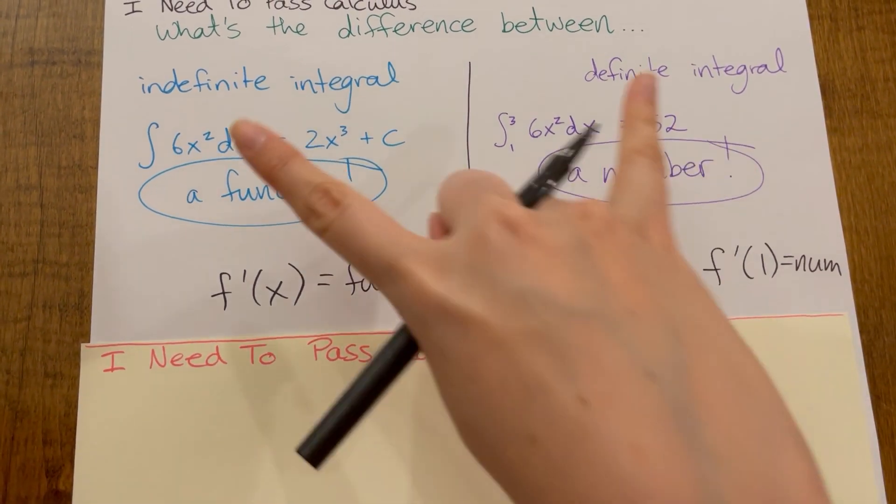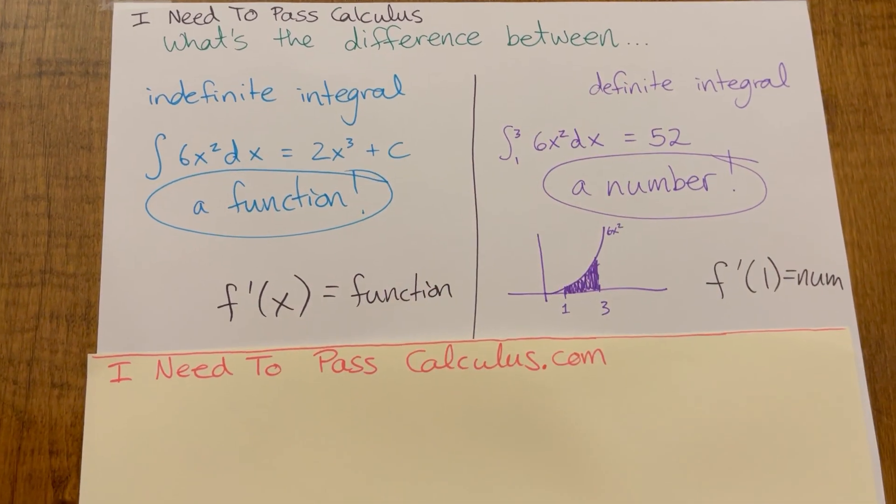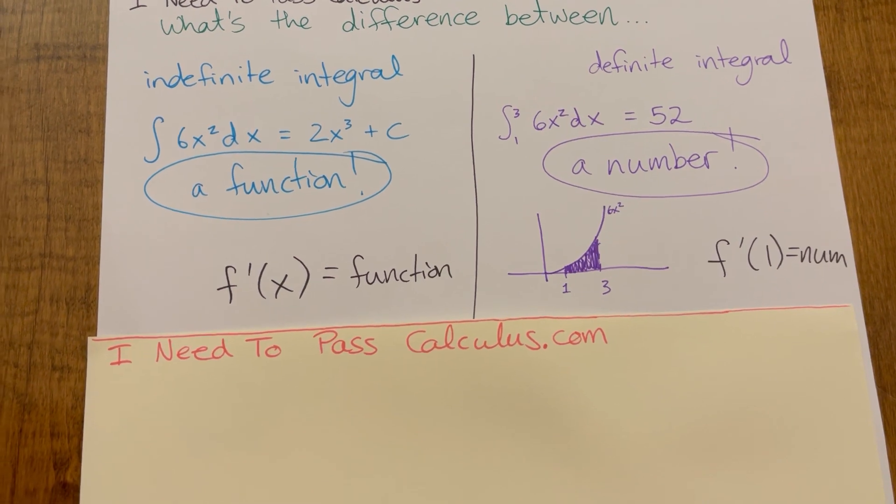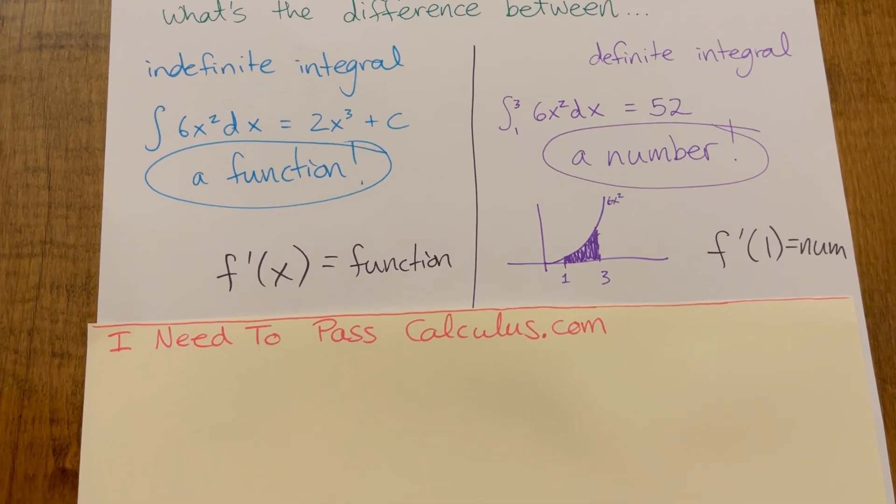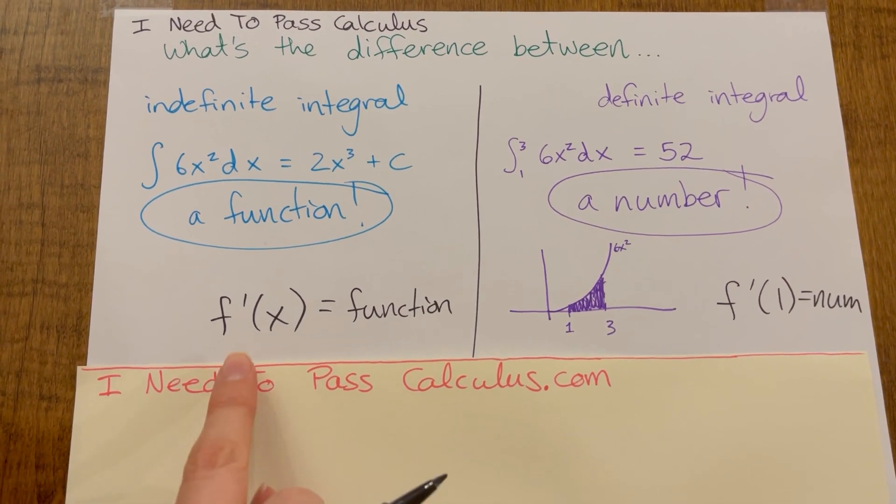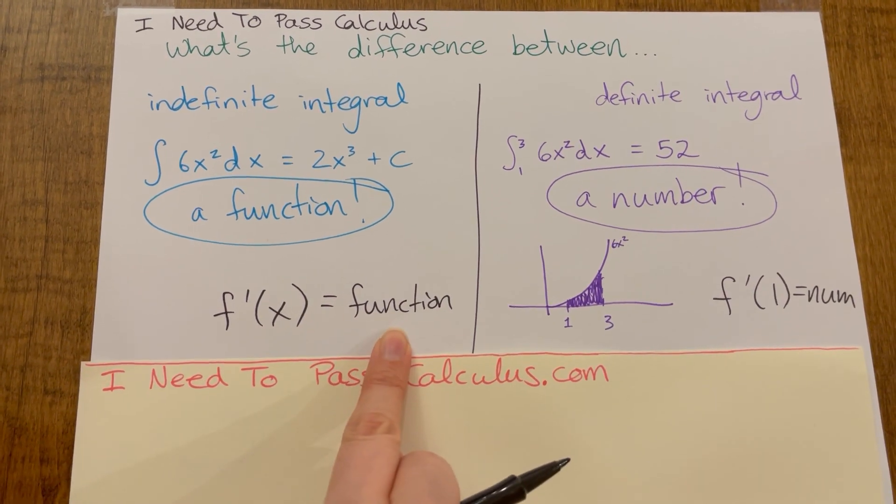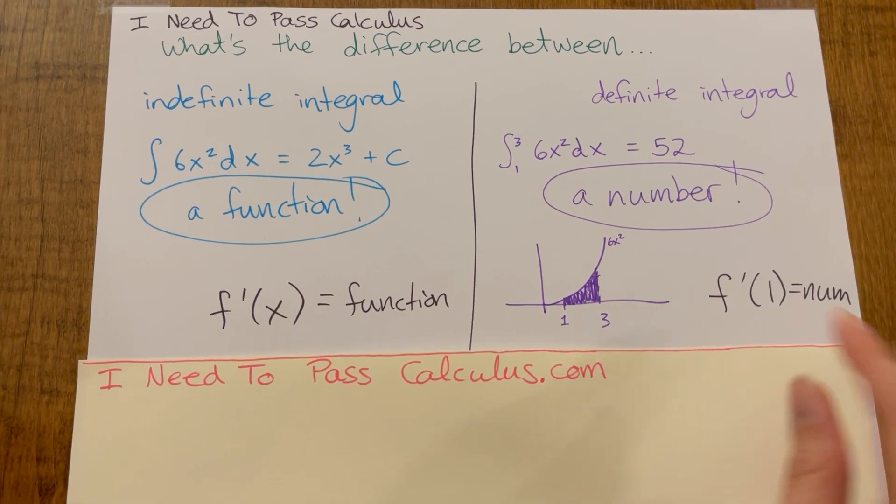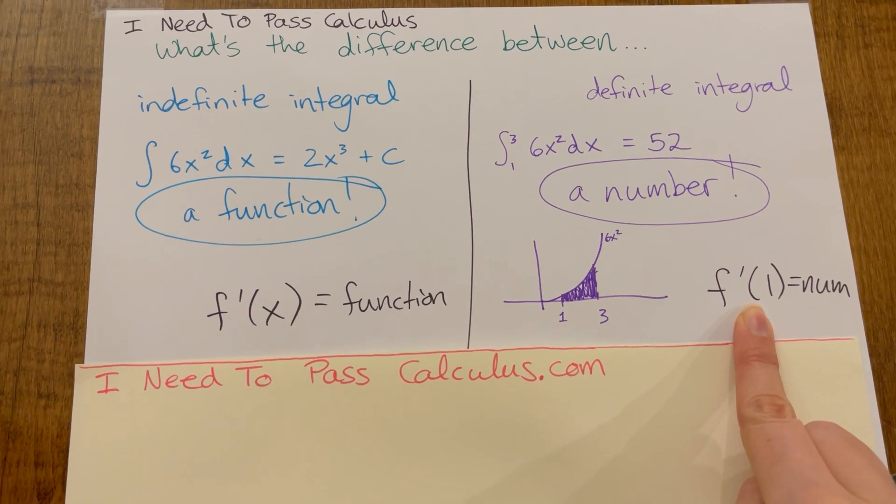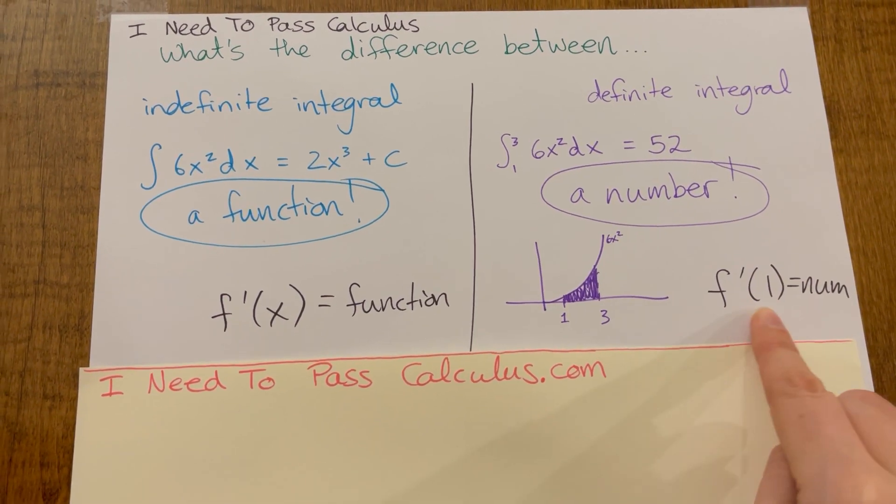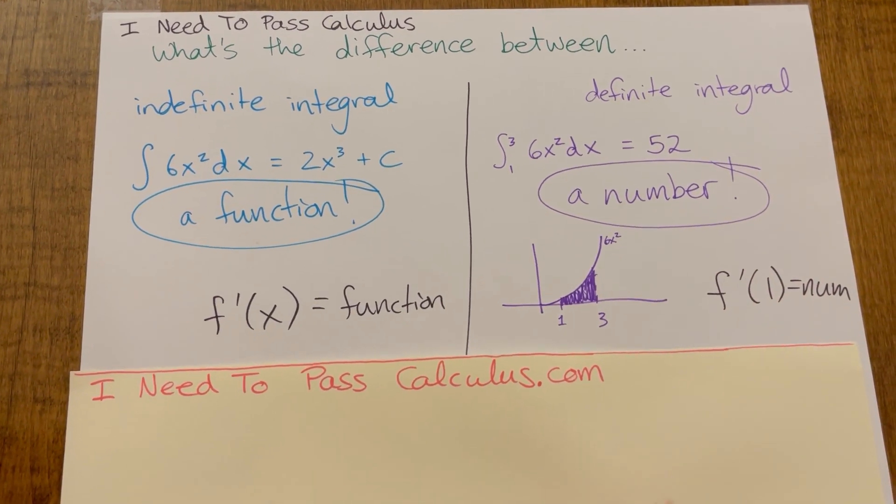And that'll be the slope of f at x equals one. So this difference between indefinite integrals and definite integrals is very analogous to the difference that you started to experience in derivatives. F prime of x equals a function, f prime of one very concretely gives you the slope at a particular number. It's the answer to a very specific question.